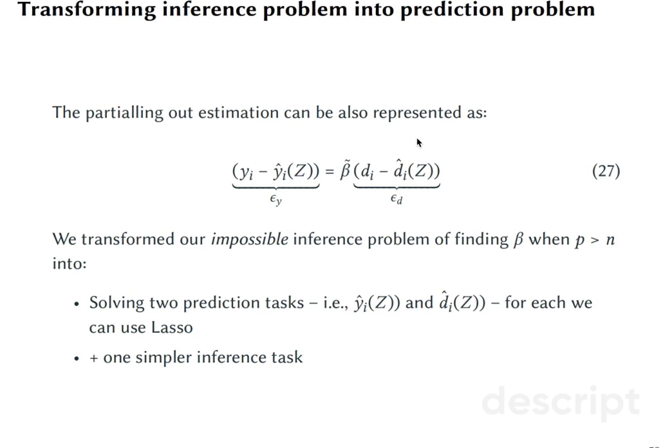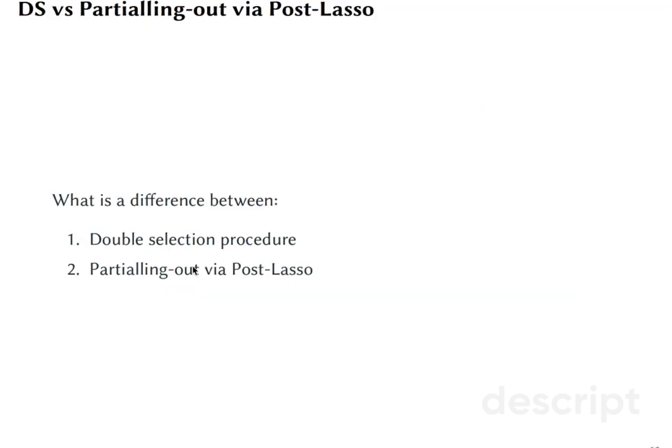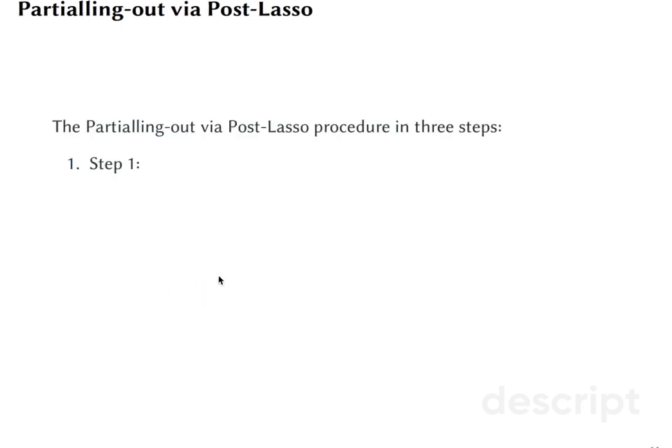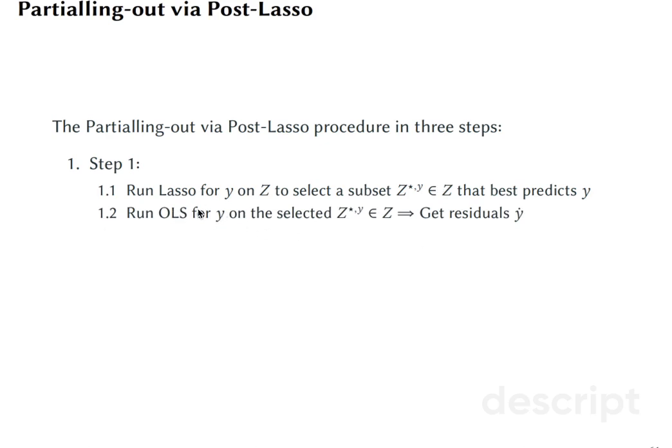I sort of called partial out via post-Lasso that's what we did in the tutorial as double selection procedure, whereas in fact they are sort of the same in spirit but different in actual implementation. Partial out via post-Lasso procedure has three steps. Step one: we run Lasso for Y on our potential confounders to select a subset of confounders that best predicts Y. And then we run OLS for Y on the selected confounders and we get residuals.